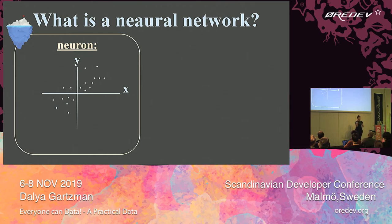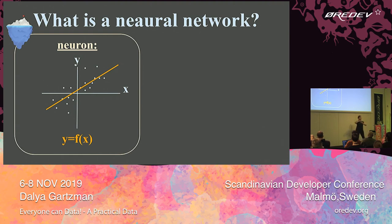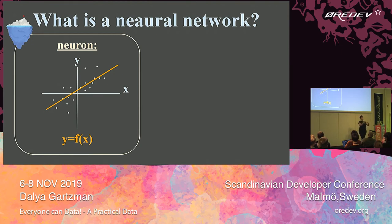We all know what a function is, right? We have an input X and an output Y. And remember, we are in the world of machine learning, learning by examples. So maybe you have some input and output examples from the world. I, as the designer of the function — the neuron — tell the neuron: listen, I think there's a linear correlation here between the input and the output. Then the neuron is shown many examples of input and output, and the neuron can figure out which exact straight line best describes the relationship between X and Y. The next time I introduce a new example, I get the input X, look at the line, and find the output Y.